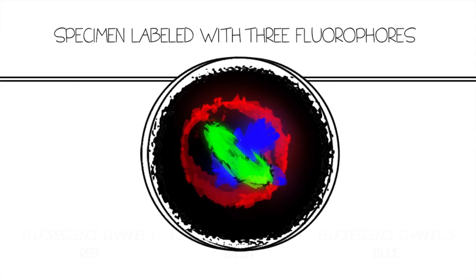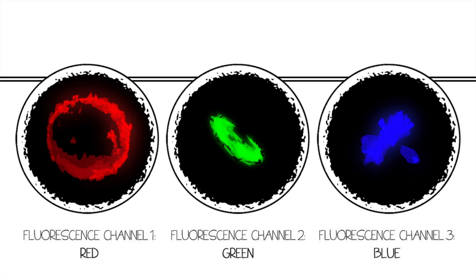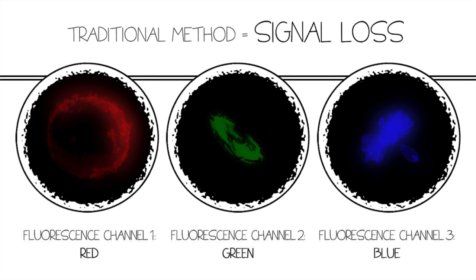Spectral separation is crucial for differentiating between your samples fluorescence emissions and determining relationships between biological structures. Unfortunately, traditional methods are inefficient and result in high loss of emission signal.